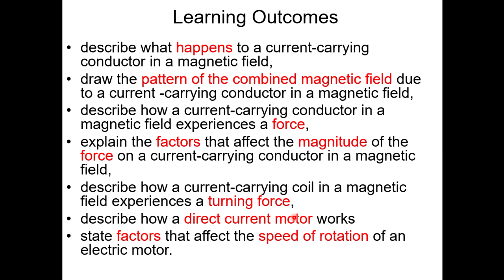These are the learning outcomes for today's lesson. Number one: describe what happens to the current-carrying conductor. Two: draw the pattern of the combined magnetic field due to a current-carrying conductor in a magnetic field. Three: describe how it experiences force. Four: explain factors affecting the magnitude of that force. Next: describe how a current-carrying coil experiences turning force, how a DC motor works, and state factors affecting the speed of rotation of an electric motor.